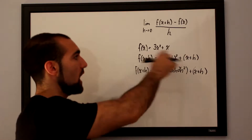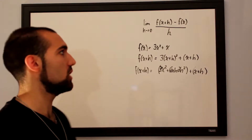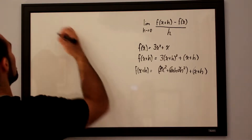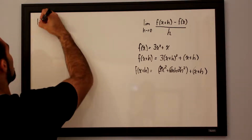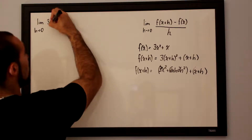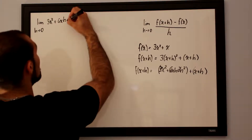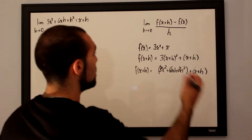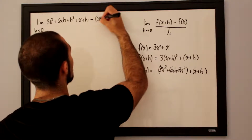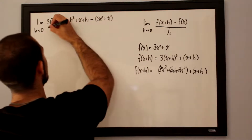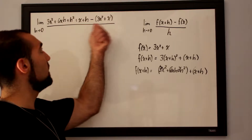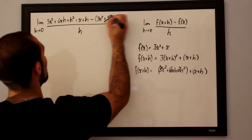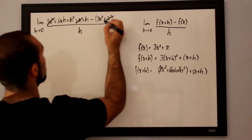Now we have our f of x plus h, and we already have our f of x, so all we need to do is subtract f of x from f of x plus h. Taking the limit as h approaches 0 for 3x squared plus 6xh plus 3h squared plus x plus h, minus the initial function 3x squared plus x — be very careful with the brackets, since subtracting the entire function turns it into negative 3x squared and negative x. After cancelling the positive and negative 3x squared terms and the positive and negative x terms, we're all over h.